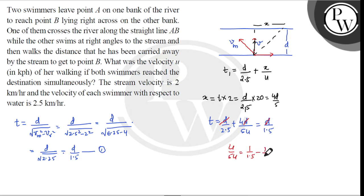Which is equal to 10 by 15 minus 10 by 25, which equals 2 by 3 minus 2 by 5. This gives us 4 upon 5u equals 10 minus 6, which equals 4 by 15. Simplifying, the value of u equals 3 kilometers per hour.